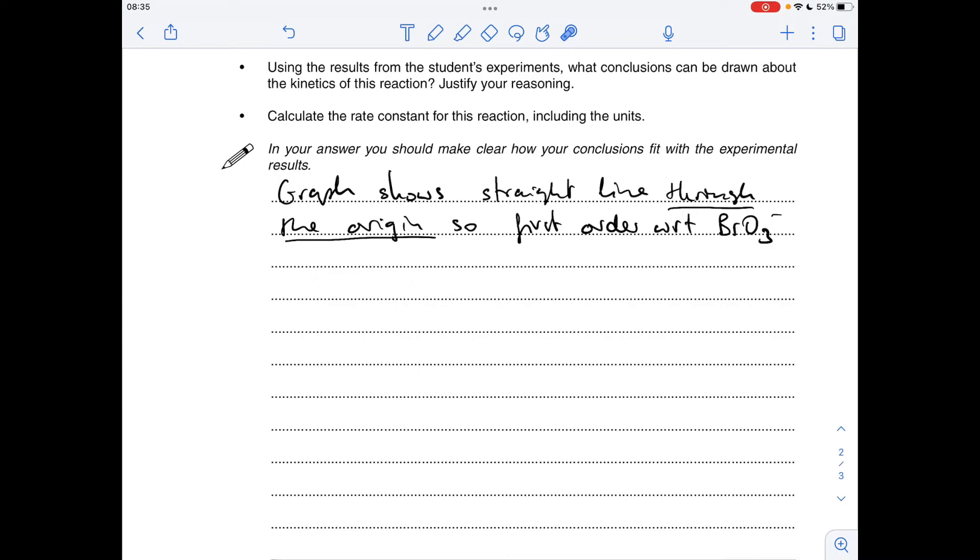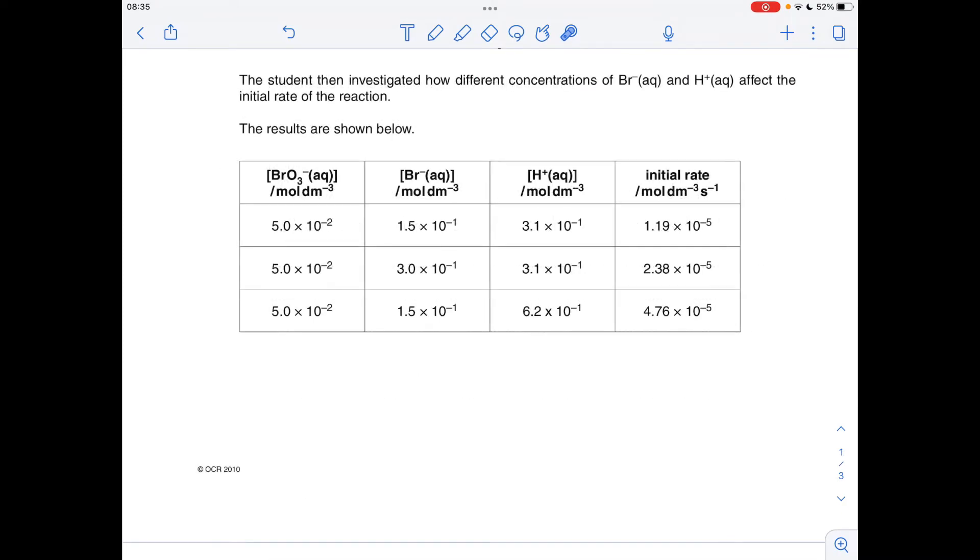We're then going to use the table to get the orders of reaction for the Br minus ion and the H plus ion. If you notice, this BrO3 minus ion concentration is not changing in the table, so obviously we can't use the table to get that—that's why we had to use the graph.